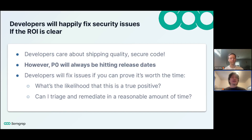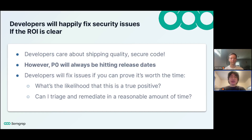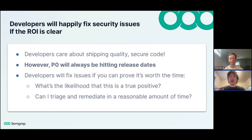We cannot expect developers to be experts in secure design — but this is okay, because it just means our AppSec programs have to be designed with all of this in mind. One point I really want to hit home: developers will happily fix security issues if the ROI is clear to them. The questions a developer will think about are: how much time is it going to take to address this security issue, and is it worth the opportunity cost? It's not that developers don't care about shipping secure code — every developer with their salt cares about the quality of their work.